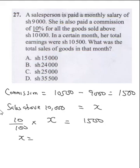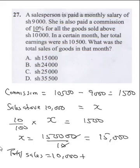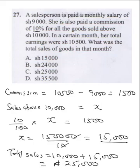Cross multiplying gives us 1,500 times 100 = 150,000 divided by 10, which gives us 15,000 shillings. Remember this is sales above 10,000. So total sales will be 10,000 plus 15,000, giving a total of 25,000 shillings. Because she sold 25,000, she earned 9,000 plus 1,500 giving a total of 10,500. The correct answer is C.